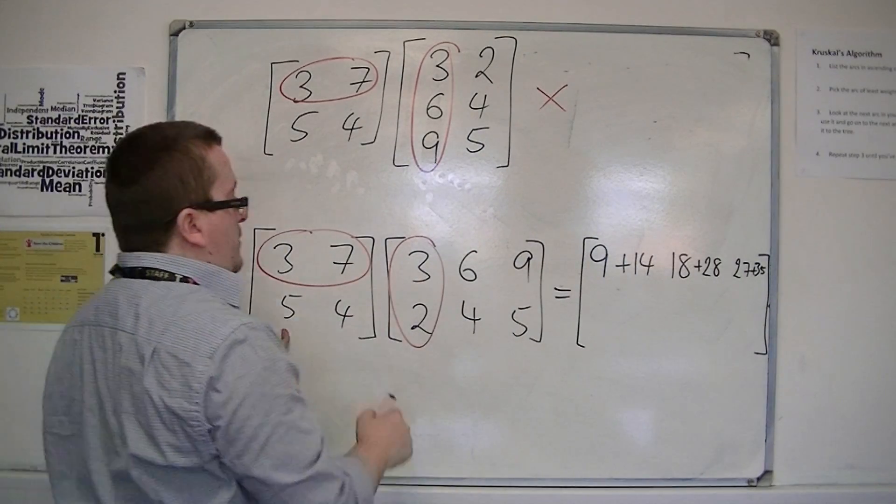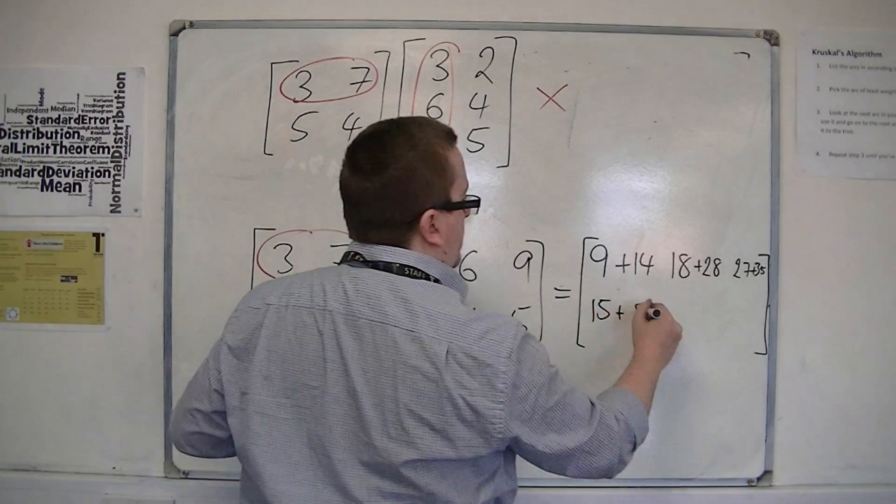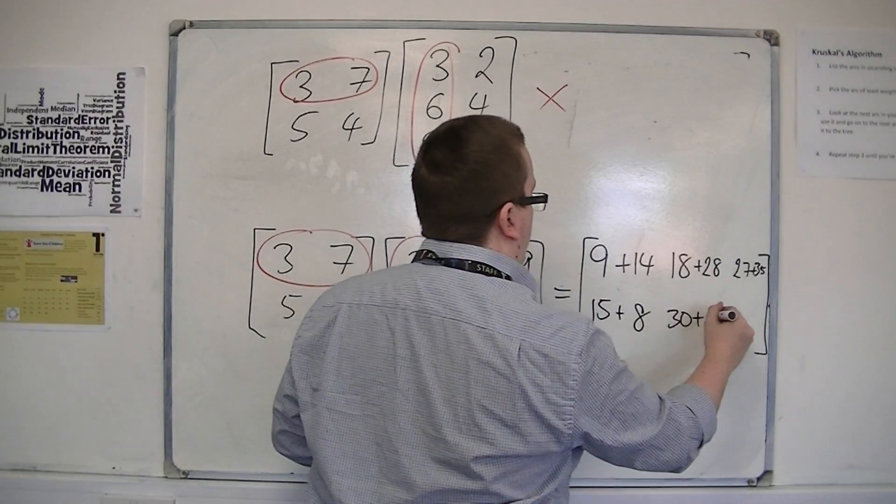5 and 4 by 3, 2, so 15 plus 8. Then 5, 4 by 6, 4, so 30 plus 16.